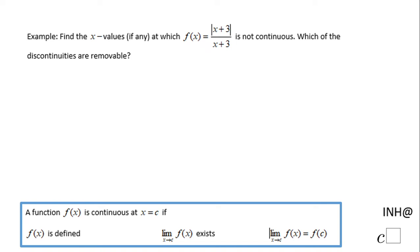Welcome. In this example, we need to find the x value at which f(x) is not continuous. Let's take a look at this function: f(x) is absolute value of x plus 3 over x plus 3.